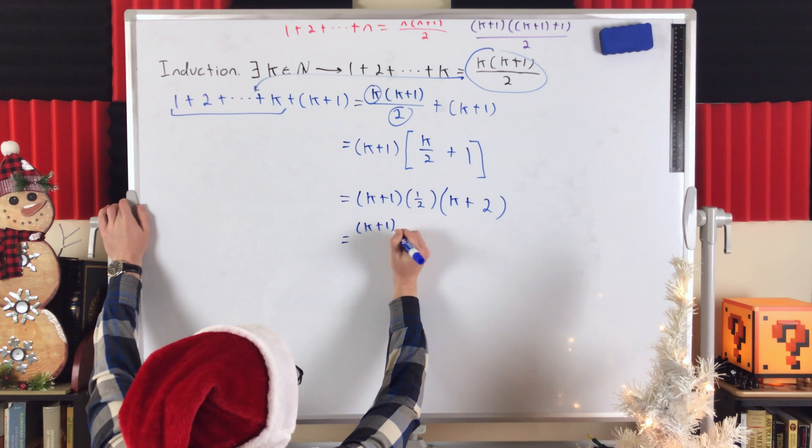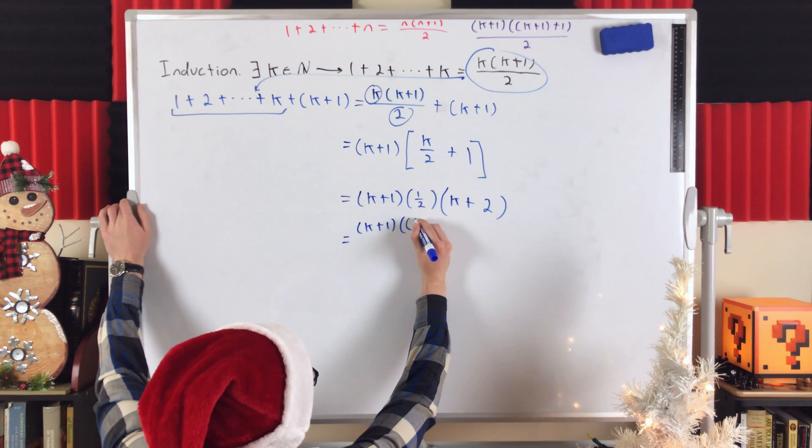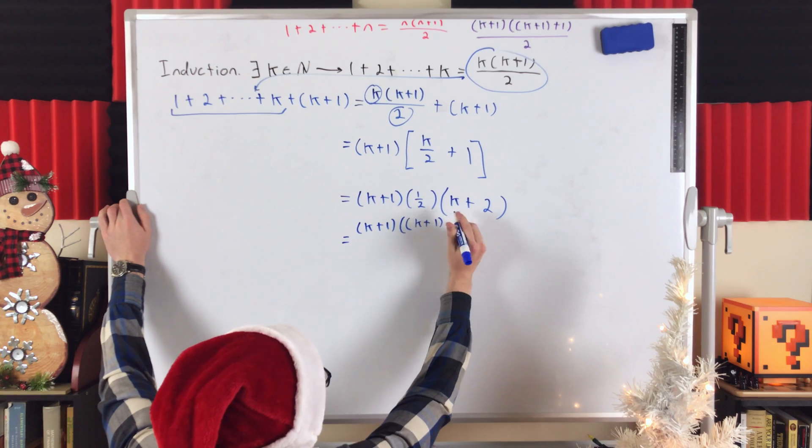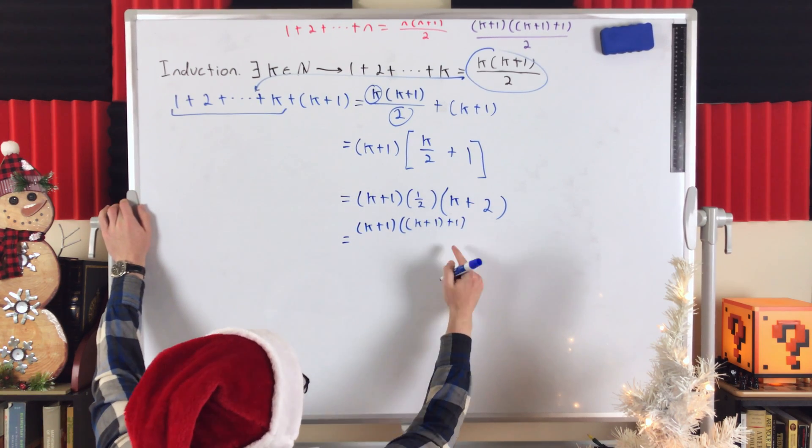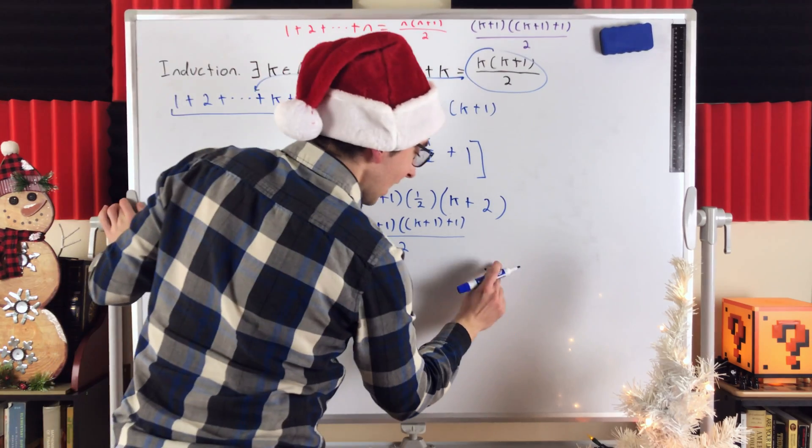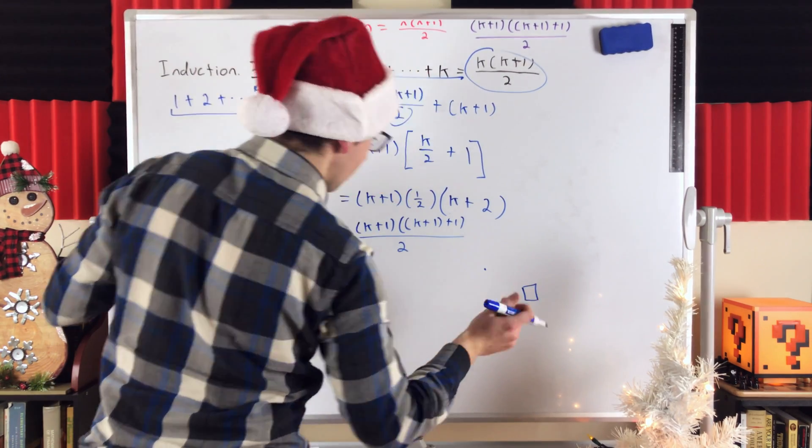We've got k plus 1 times k plus 2, which is k plus 1 plus 1. And then, that's all getting multiplied by 1 half, which is the same as dividing by 2. Look at that. That's the proof. Pretty sweet.